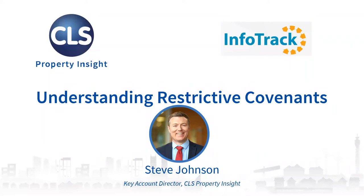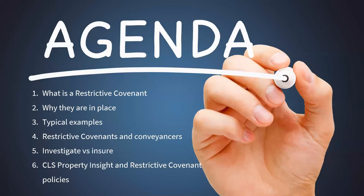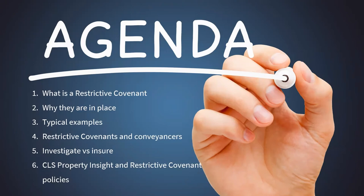We're very welcome to take questions as we go through. So the agenda for today: we'll highlight what is a restrictive covenant and why they're in place. We'll highlight some typical examples of restrictive covenants and their impact on conveyances and on the sellers and buyers that you represent. We'll also do a little bit of exploration around the dichotomy of investigate restrictive covenant or insure against, because either is potentially a valid course of action. And then we'll spend a bit of time on the specific restrictive covenant policy that CLS Property Insight makes available through InfoTrack, looking at the statements of fact required, loss events covered, and questions from previous webinars. So hopefully a useful agenda for the next 40 minutes.